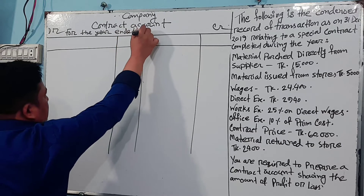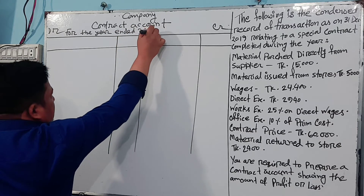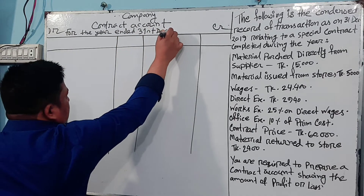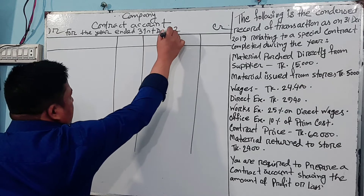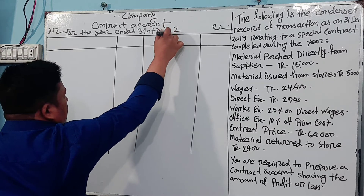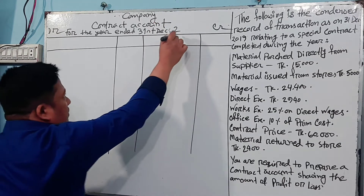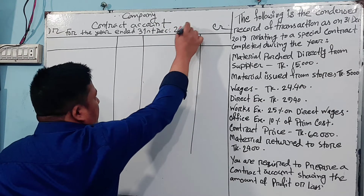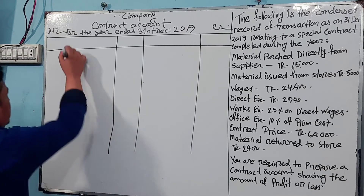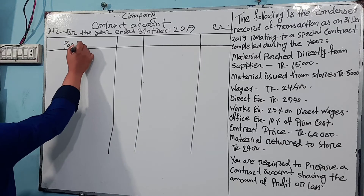The contract account is for 31st December 2019. We will write the particulars and Taka columns.